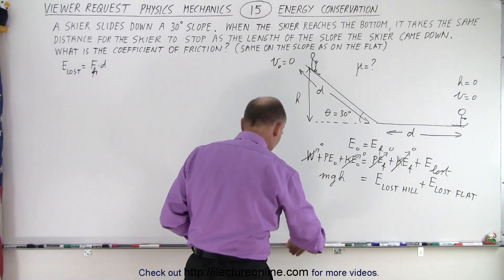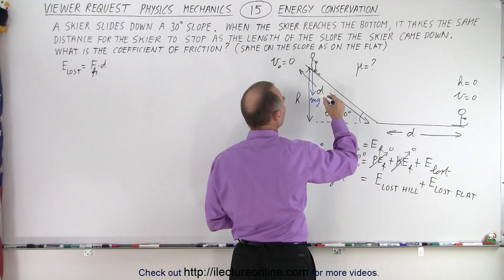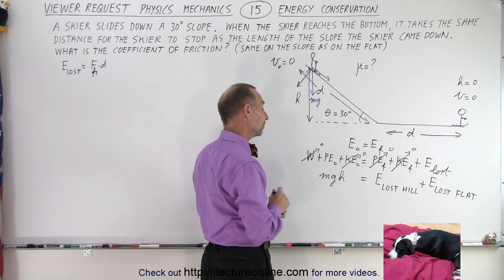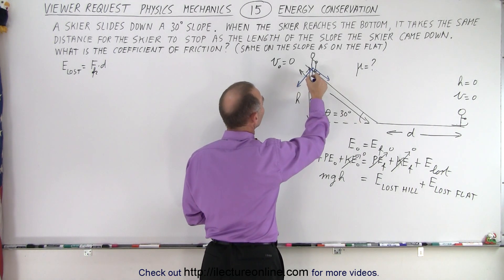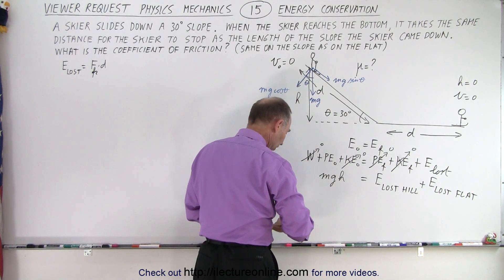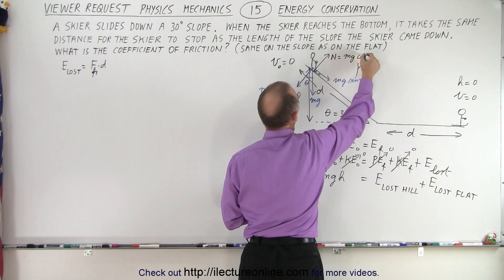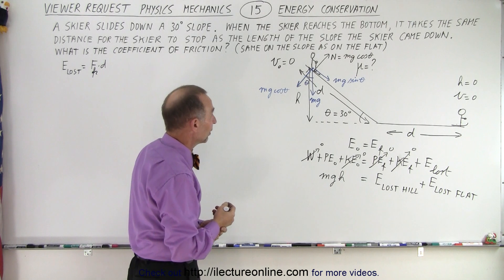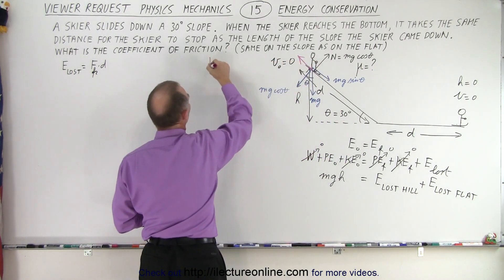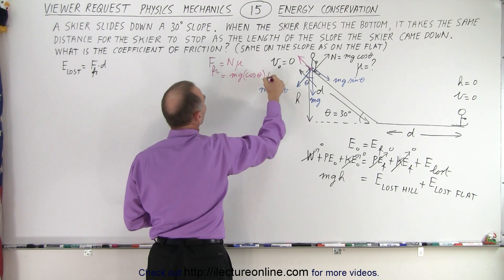Let's think about the friction force on the hill. The weight of the skier, mg, can be divided into parallel and perpendicular components. The angle here is theta, so the parallel component is mg sine theta and the perpendicular component is mg cosine theta. Because we have mg cosine theta, the normal force pushes back with the same magnitude: normal force equals mg cosine theta. The friction force — in the opposite direction — equals the normal force times mu, which is mg cosine theta times mu.